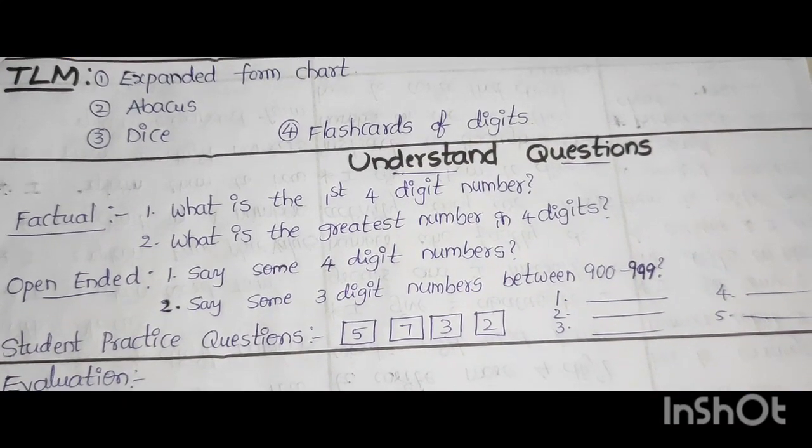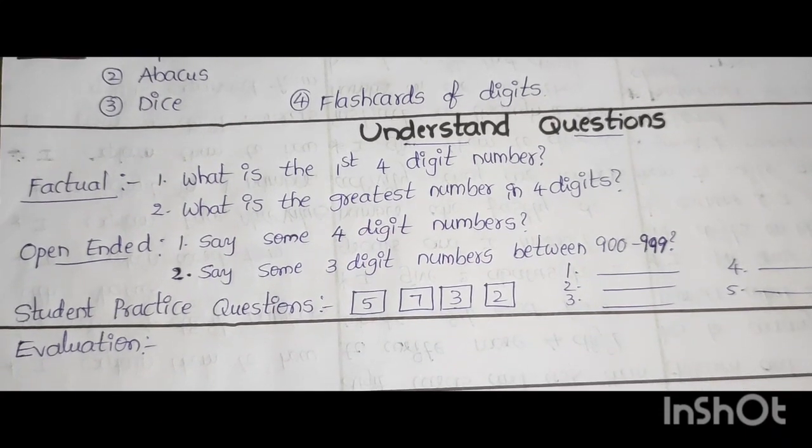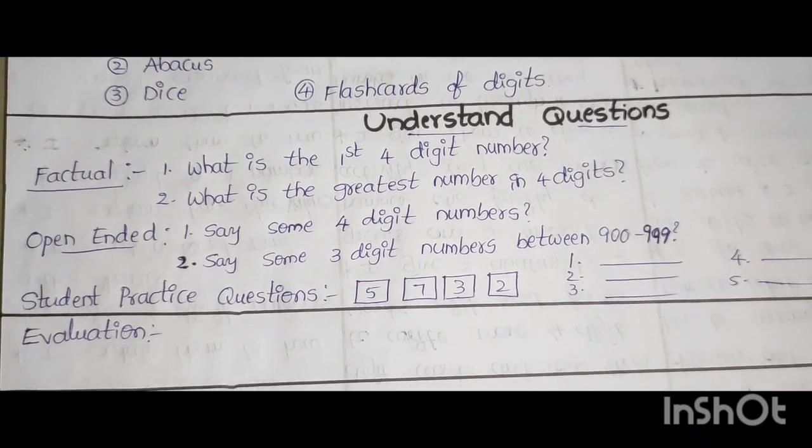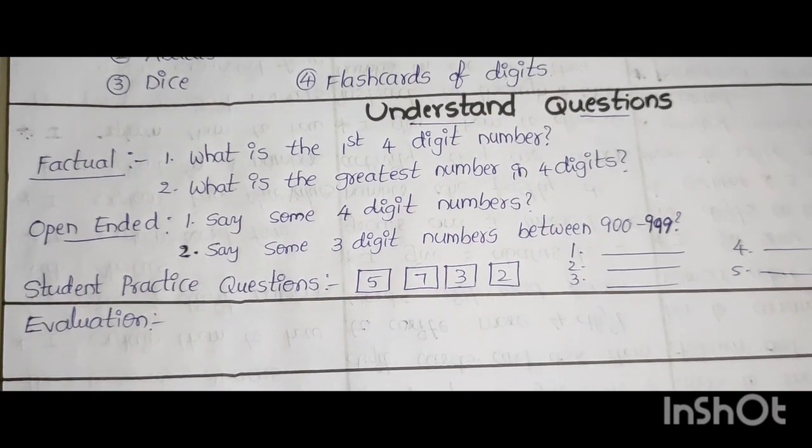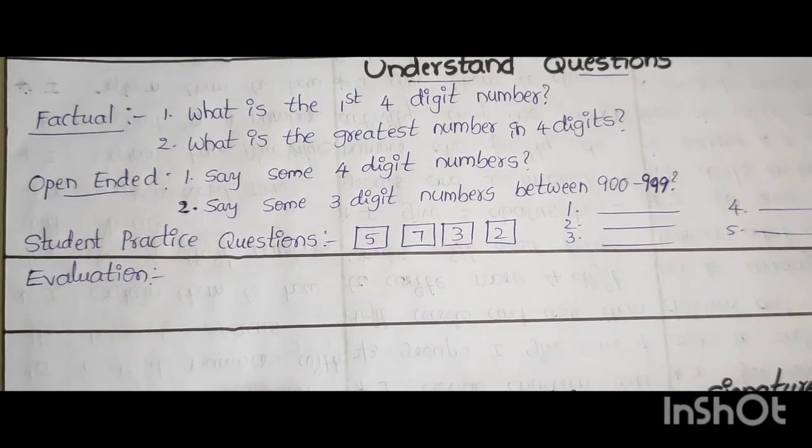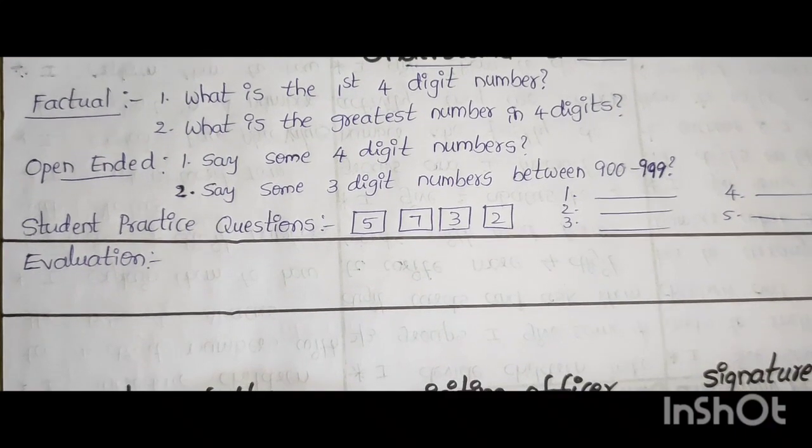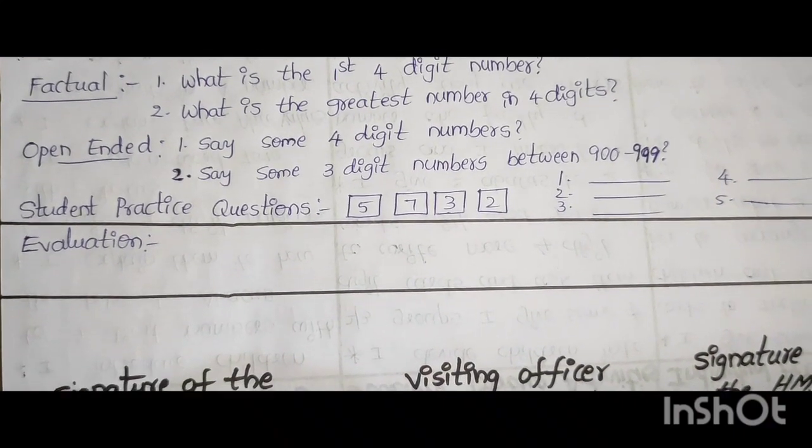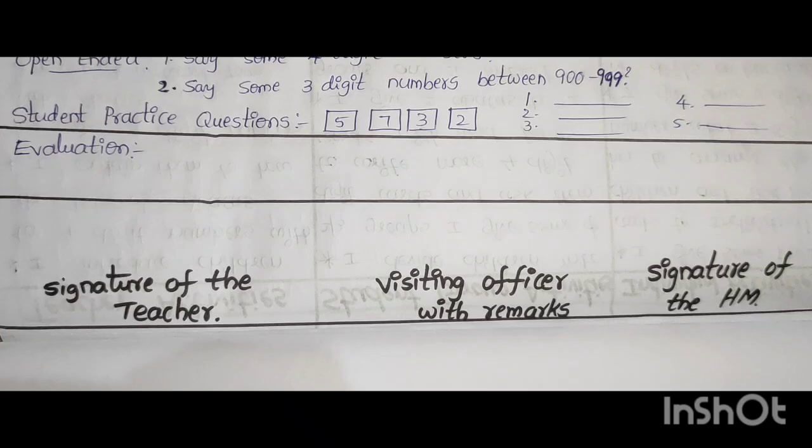TLM: Expanded form chart, Abacus, Dice, and flashcards of digits. Understand questions. Factual: What is the first 4 digit number? What is the greatest number in 4 digits? Open ended: Say some 4 digit numbers. Say some 3 digit numbers between 900 to 999. Student practice questions.